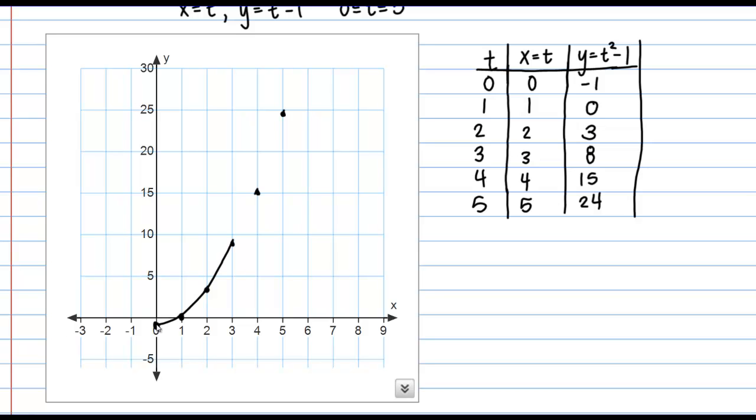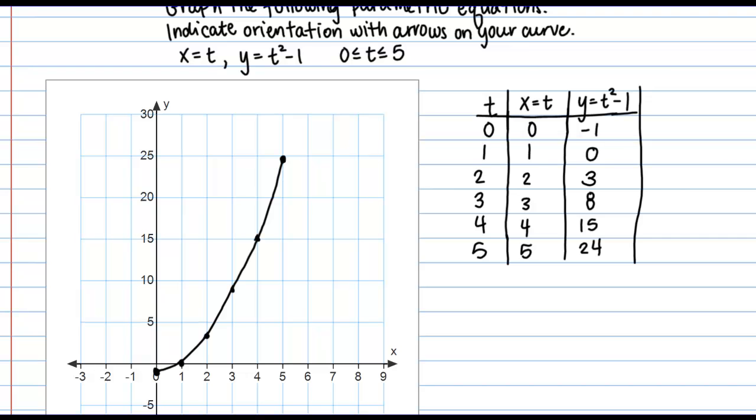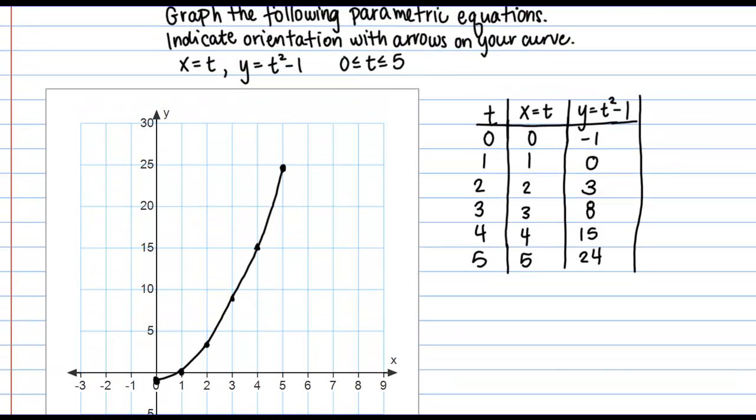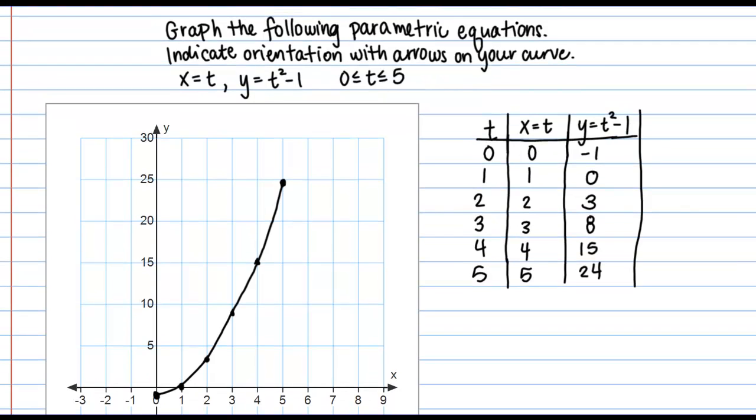Now, I'm not going to extend this beyond this last point here, because I am cutting this off at t equals 5, and same on the other end, cutting this off at t equals 0. So this here then is the parametric curve defined by these equations over this interval of t values.